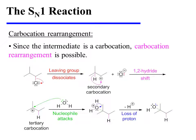Since the SN1 reaction has a carbocation intermediate, carbocation rearrangement is a possibility. In the following example, chloride dissociates from the substrate, yielding a secondary carbocation. Notice that the adjacent center is a tertiary center and would make a better carbocation. As a result, a 1,2-hydride shift occurs in which the hydrogen moves with its bonding pair of electrons to the adjacent center, resulting in a tertiary carbocation intermediate, which is more stable than the secondary carbocation.